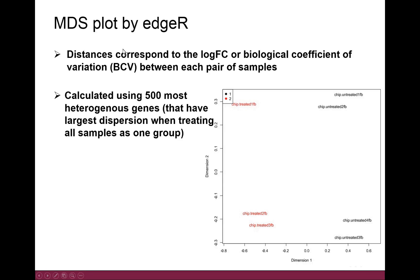This is the MDS plot, from the edgeR tool. The distances in this plot correspond to the log fold changes or biological coefficient of variation between each pair of samples, calculated using the 500 most heterogeneous genes — those with the largest dispersion when treating all samples as one group. The idea is to see if samples separate as groups. Here the red ones are the treated ones and the black ones are the untreated ones. You can see they are separated nicely, but something else is also happening because they are also separated in the other direction.